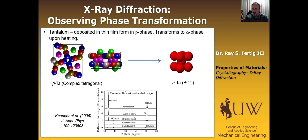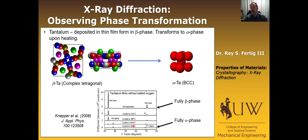We used X-ray diffraction to track this transformation. In the figure, angle is on the x-axis and intensity on the y-axis. The top curve is the fully beta phase as deposited. As we cycled the temperature from 335 to 355 to 450 and finally to 600°C, the peaks defining the beta phase melted away and the peaks defining the alpha phase grew in. By 600°C we had a fully alpha phase BCC tantalum.